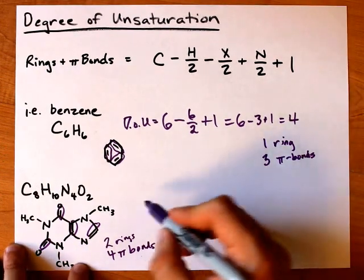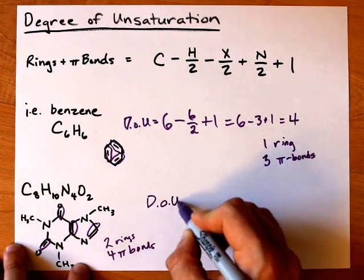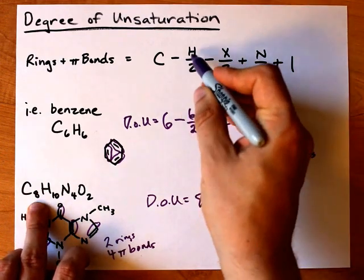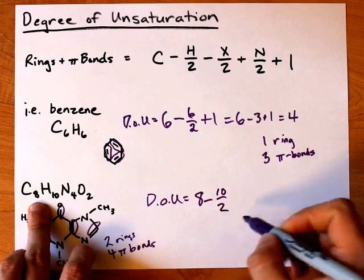All right, let's see. The degree of unsaturation for this molecule is: carbons, eight, minus hydrogens over two—that's ten over two.